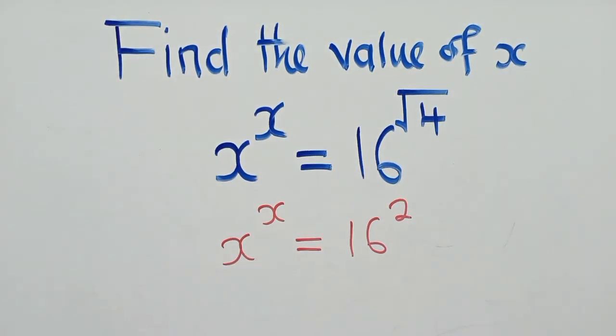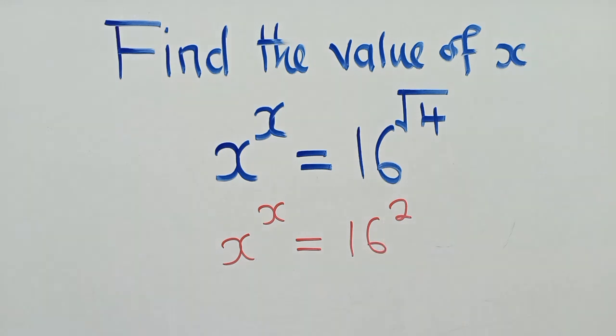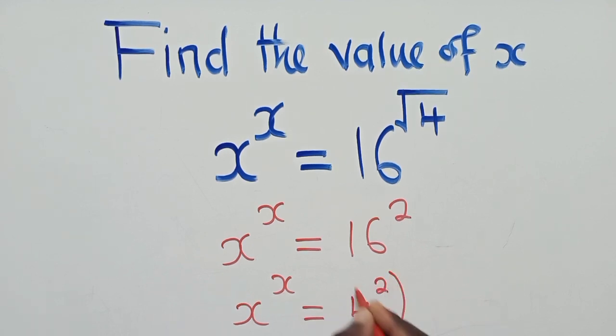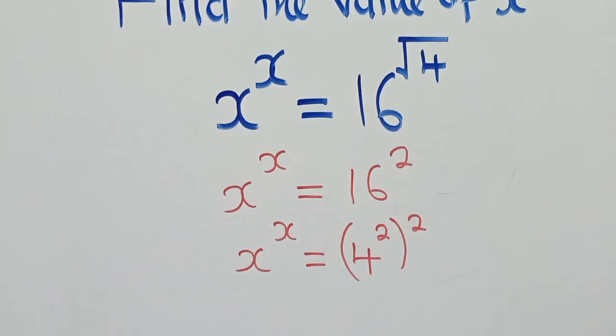So what we're going to do is try and balance this. The base and the power must be equal to each other. So it would be x power x equal to—here we say 4 power 2 and power 2 there.